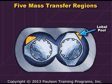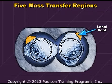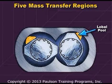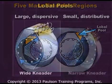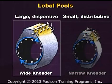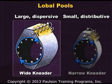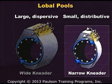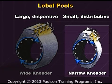Lobal pools are the pools of raw material captured by the pushing flight flank or lobe. For example, a wide kneading element will capture a large dispersive lobal pool, while a narrow kneading element divides the melt into streams, capturing a small pool of melt.